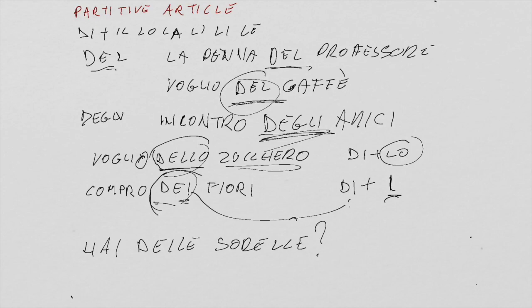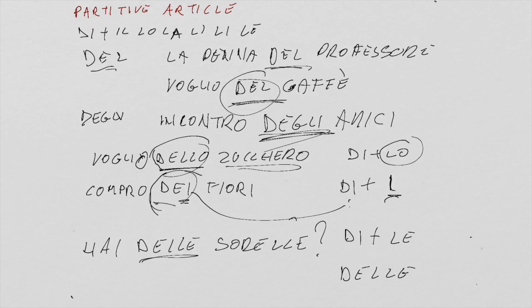Another example: 'hai delle sorelle?' — Do you have any sisters? Why 'delle'? Because sorelle is plural and feminine, so the correct article in front of sorelle is LE, and DI combined with LE makes 'delle.'